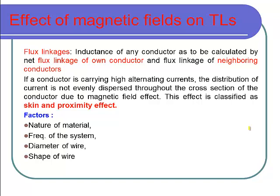To understand these problems, we first need to start from flux linkages. The inductance of any conductor has to be calculated by the net flux linkage on the conductor. If we consider a conductor that carries a current, there will be a magnetic flux set up, and that magnetic flux can be split into two forms: the flux that links with the conductor internally, and the flux that links the outermost part of the conductor.